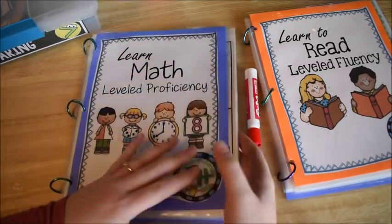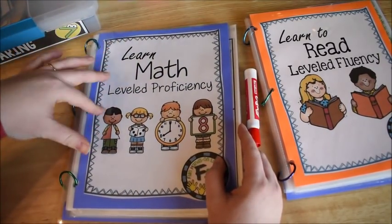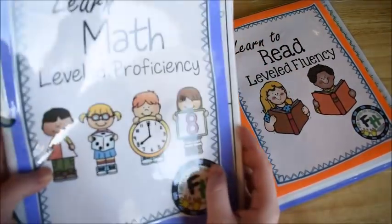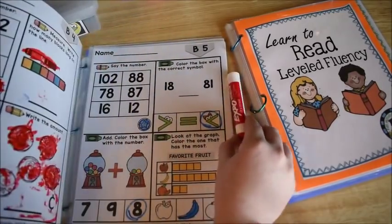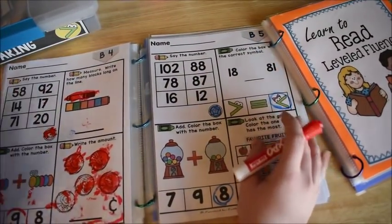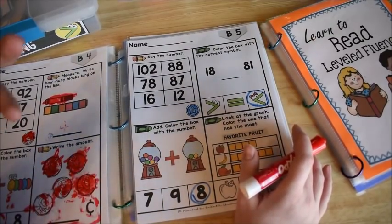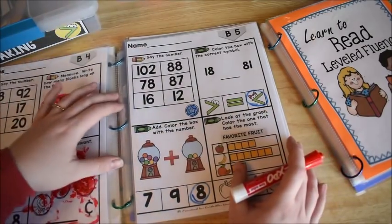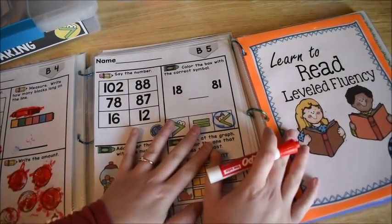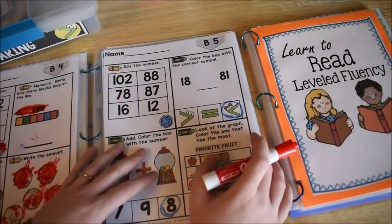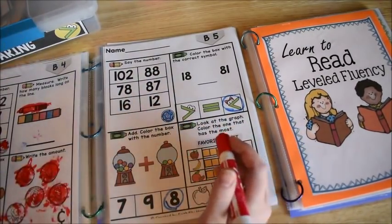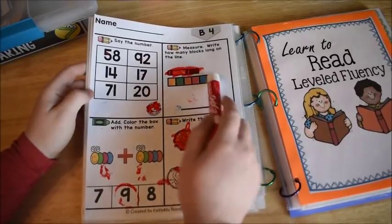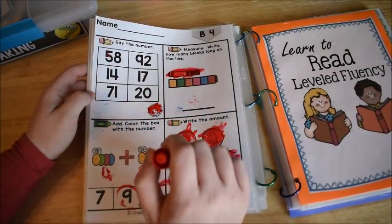Now what we use is our Learn Math Level Proficiency and our Learn to Read Level Fluency. These are just books that I made. Basically we do one page a day for fluency to get adequately prepared for any other math we're going to do during the day. These books do not come in my curriculum, they're separate. They're just something we do really quick at the beginning before we actually do the math lesson. So today you're going to see a clip, and you're going to see one of my kiddos doing this page.